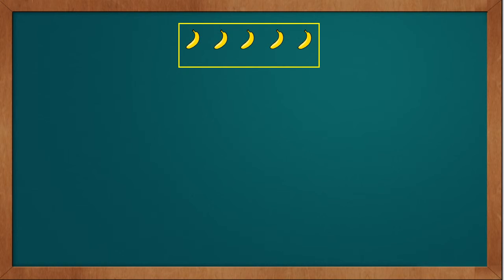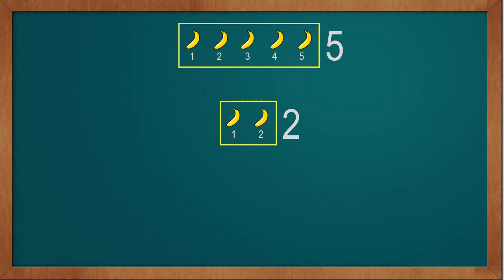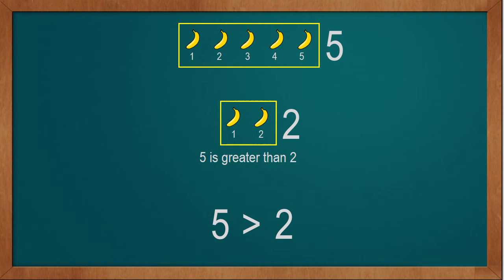Now we will compare 5 with another number. First we will take 5 bananas: 1, 2, 3, 4, 5. We have a total of 5 bananas. Now suppose we take 2 bananas: 1, 2. We have 2 bananas. Now we compare 5 with 2 bananas. The quantity of 5 bananas is greater than the quantity of 2 bananas. So we will write: 5 greater-than sign and 2. 5 is greater than 2.